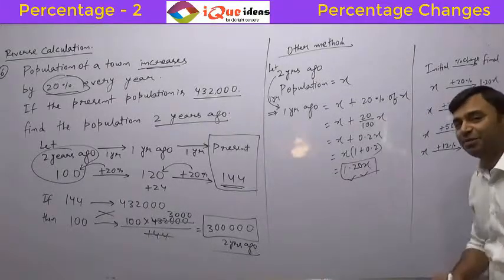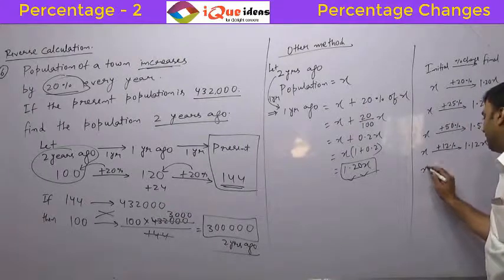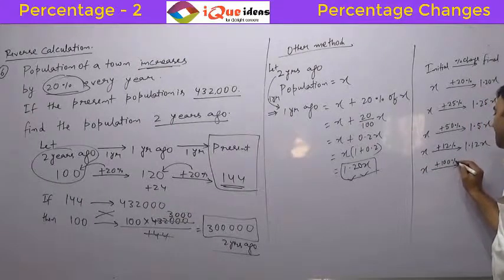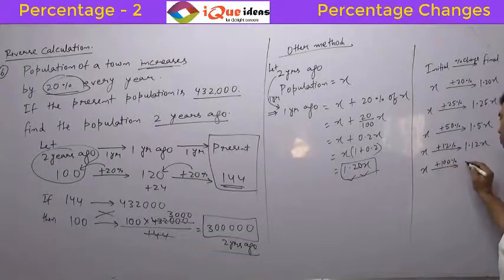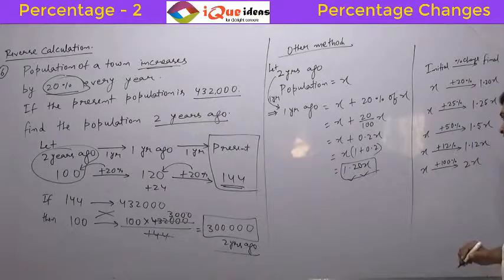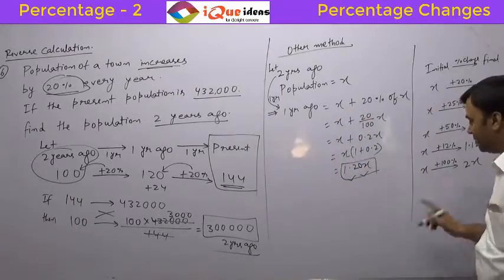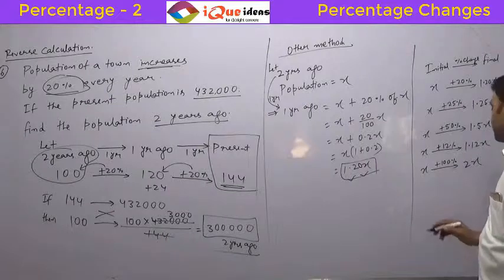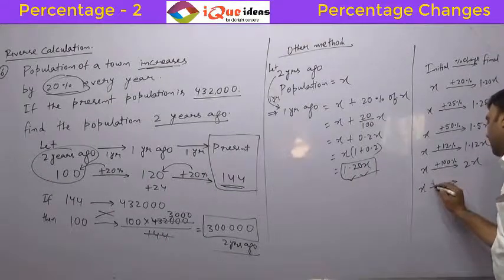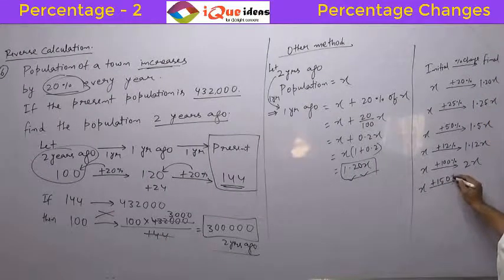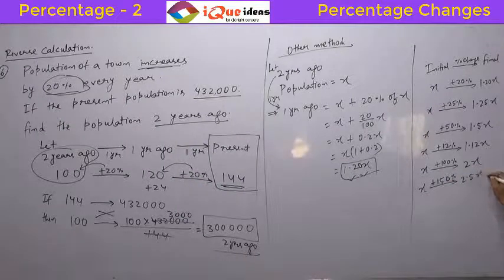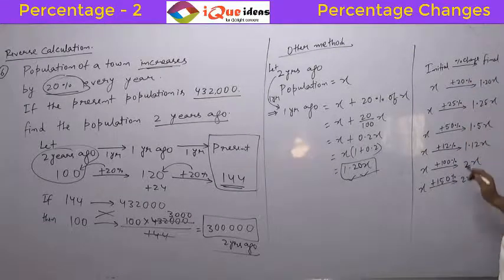If something increases by 100%, it must become double, so it is 2x. For 150%: 100% gives factor 2 and 50% gives 0.5, so together it is 2.5x. Whatever the incremental percentage, it simply comes after the decimal — so 150% increase gives 1.50x, and so on.